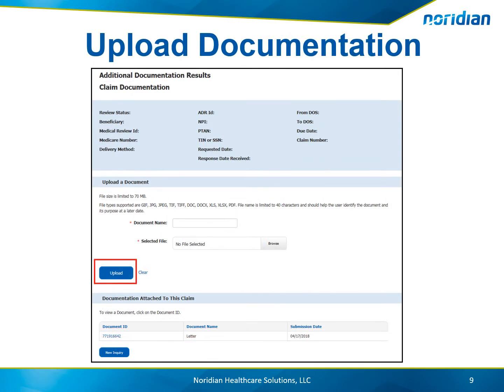To upload supporting documentation, enter a recognizable document name and browse your computer for the file containing the documentation. Please note that the file size of each upload is 70 megabytes, and the accepted file types are listed on the screen. Then choose Upload. The documentation will now display under the documentation attached to this claim table. Any additional documentation can be uploaded following the same process.